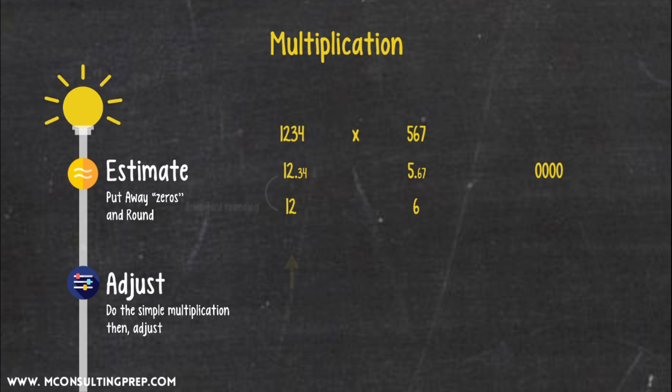It depends on the degree of upward or downward rounding you made in step 1. In general, you would need an upward adjustment if a downward rounding has been made, and in contrast, a downward adjustment would be necessary if an upward rounding has been conducted. In the end, return the number of zeros which has been put away in step 1. Now, you have your answer.